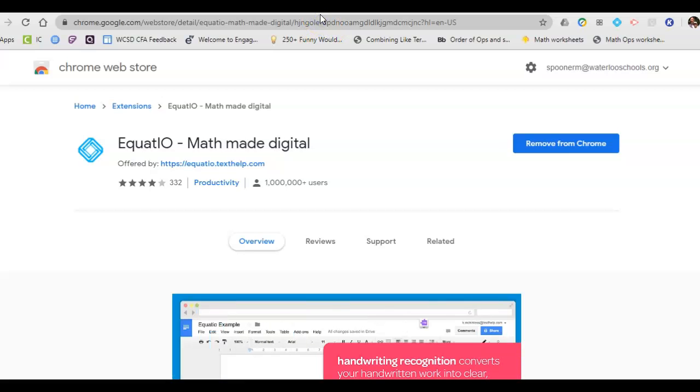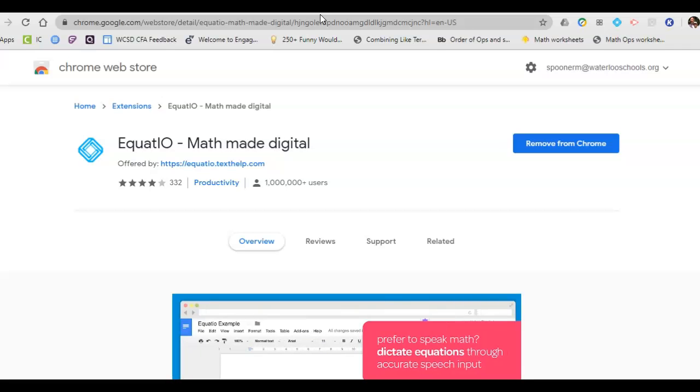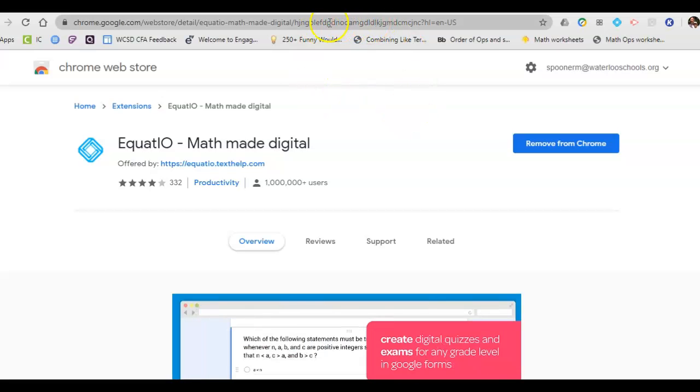Hey everybody, for this week's Google Form you're going to need to install a Chrome extension onto your browser. I put the link in that first page of the Google Form and you're going to have to copy and paste it and it's called EquatIO, I think that's how you say it.